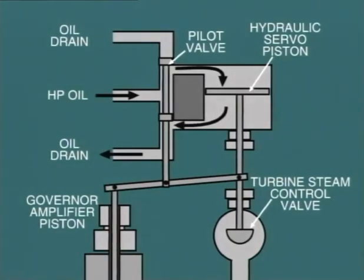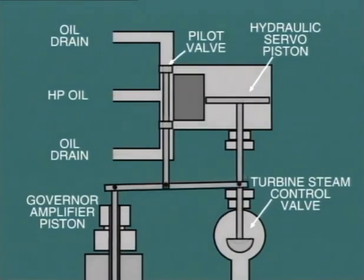At the same time, it will allow oil below the piston to pass to the oil drain. In response to this, the piston will be forced downwards, partially closing the control valve. This movement downward also moves the operating lever, and this moves the pilot valve downward, closing off the servo cylinder, which is now in a new position.